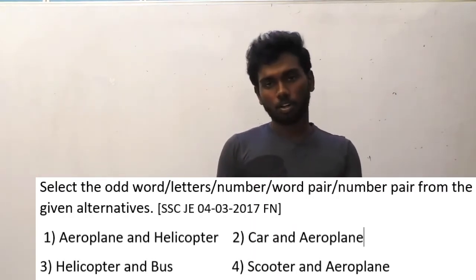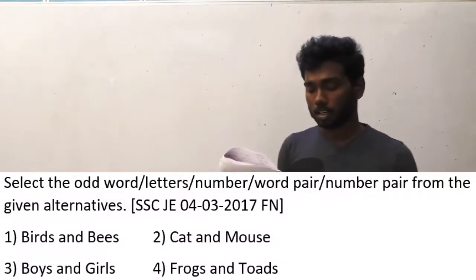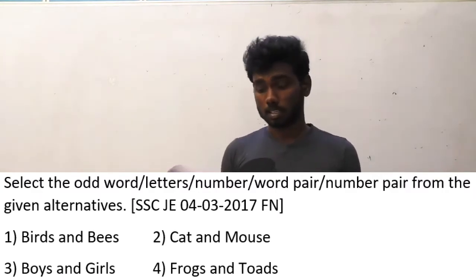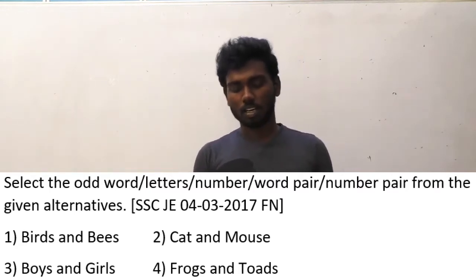Question number 24 is also from SSCJE 4-3-2017, 4 noon. Select the odd word pair from the given alternatives. The options are birds and bees, cat and mouse, boys and girls, frogs and toads.